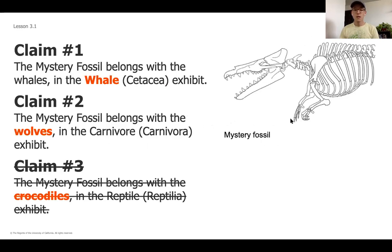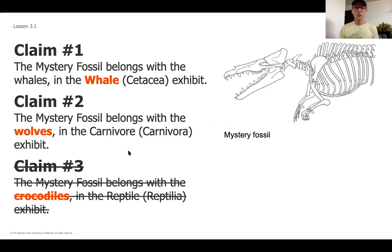Before we get going, just want to remind you what our mystery fossil looks like, and then focus on what we really need to dial in for this final unit. A fossil is about to go on display, and we want to make sure it's in the correct display in the museum. As paleontologists in this final unit, we've got to figure out: is that mystery fossil most closely related to a whale, or is it most closely related to a wolf?